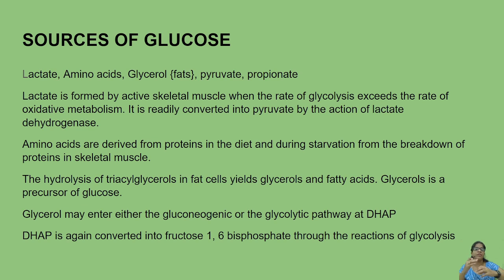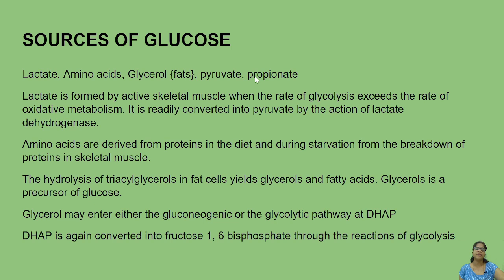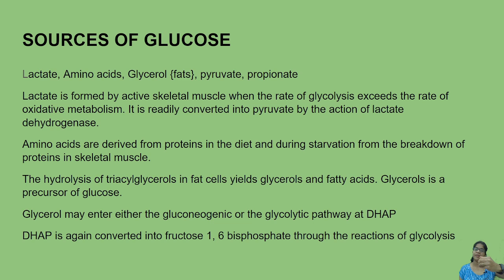Glycerol, which I discussed in the beta-oxidation pathway, contains three fatty acid chains forming triacylglycerol. When triacylglycerol is broken down, it releases glycerol, which enters the glycolysis cycle either as glyceraldehyde 3-phosphate or dihydroxyacetone phosphate, feeding back into glucose production. Propionate is first converted into succinyl-CoA, an intermediate of the Krebs cycle, which is then converted into oxaloacetate.